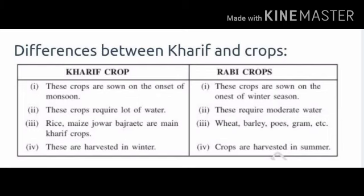There are two types of crops: Kharif crop and Rabi crop. Kharif crops are actually sown on the onset of monsoon, and Rabi crops are sown on the onset of winter season.